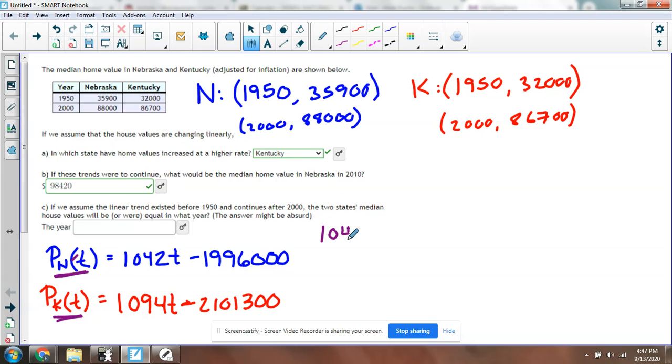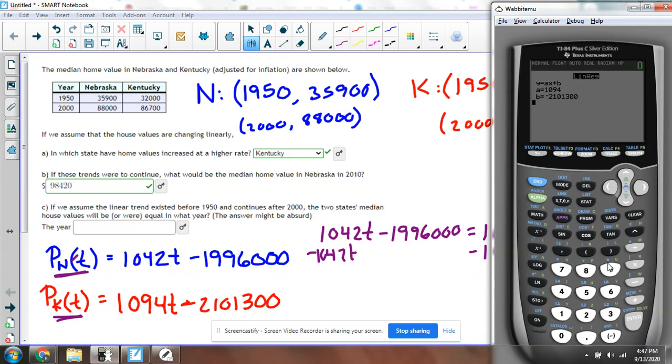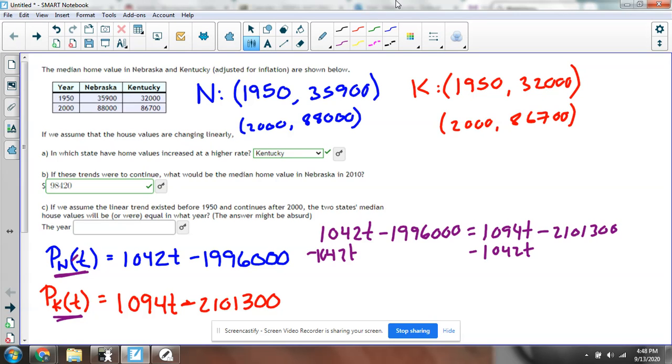I'll have 1,042t - 1,996,000 = 1,094t - 2,101,300. Subtracting 1,042t from both sides, I get 52t on the right-hand side.